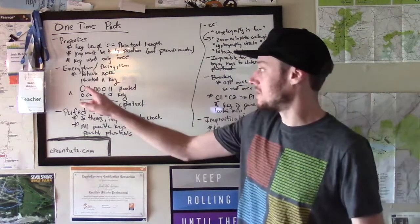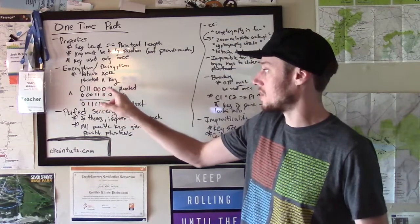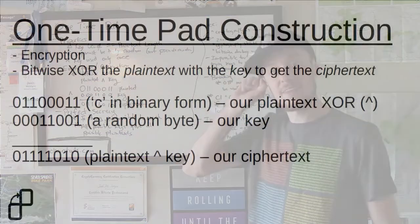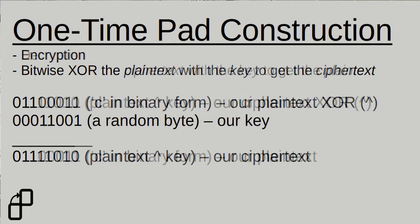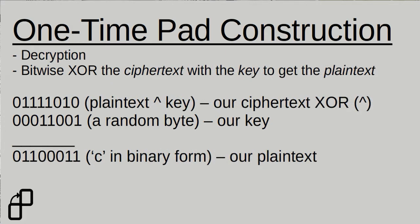So let's say, for example, we have this byte here: 0, 1, 1, 0, 0, 0, 1, 1, as our plain text. And that's encoding some information, maybe like a character of our message. We take our truly random key, 0, 0, 0, 1, 1, 0, 0, 1, and we do a bitwise XOR. So we get a cipher text of 0, 1, 1, 1, 1, 0, 1, 0. If you're not familiar with bitwise operations, there's some other great tutorials out there you can take a look at to understand this concept better.